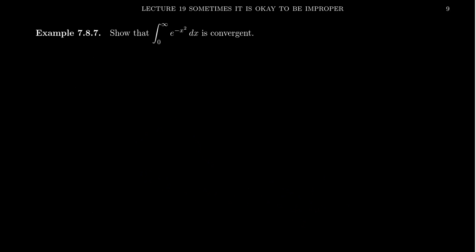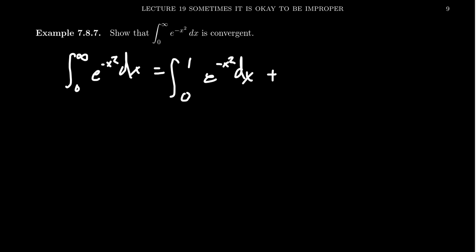So let me show you how you can use this. Let's consider the integral from zero to infinity of e to the negative x squared. Well, e to the negative x squared is a hard integral — it doesn't have an elementary antiderivative. But what we can do is break this up: integral from zero to one of e to the negative x squared dx, plus the integral from one to infinity. That might seem like a weird thing to do at first, but it's perfectly legitimate — you can break up the interval however you want.